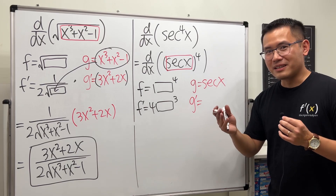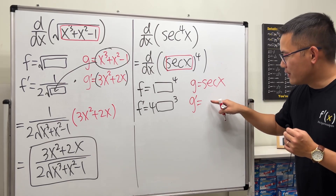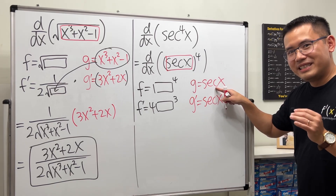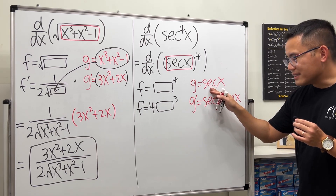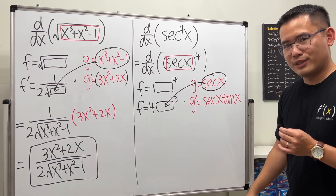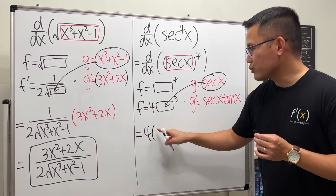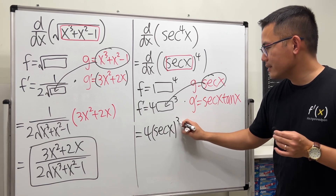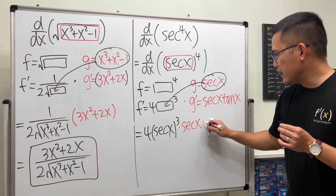If you don't remember, check out the video in the description for some tips. The derivative of secant first repeats itself — secant x — and in calculus secant and tangent are best friends, so you also invite tangent x. So the derivative of secant x is secant x times tangent x. Put secant x in the box and multiply — we get 4·sec³(x) times secant x times tangent x.